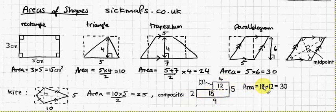Add those two areas together, 18 plus 12 is 30. So the area of the composite shape is 30. And that's it!